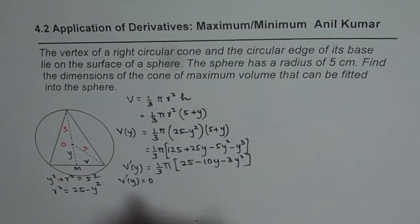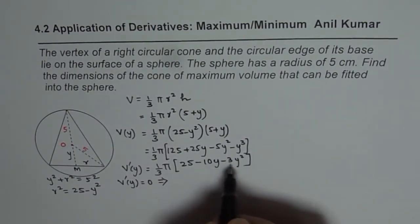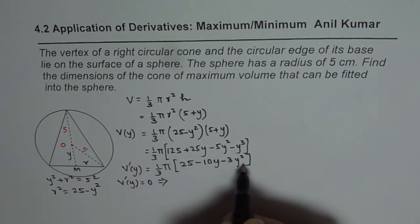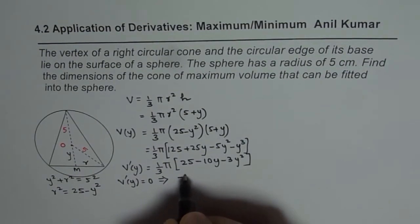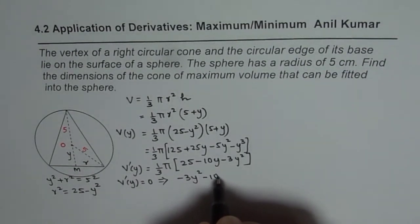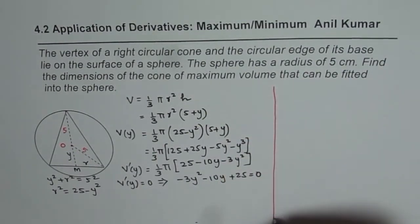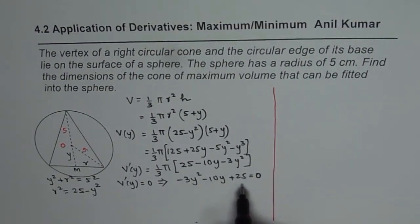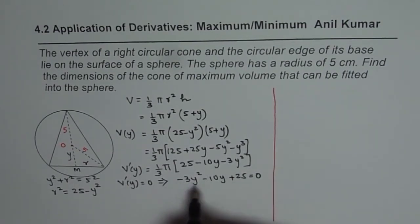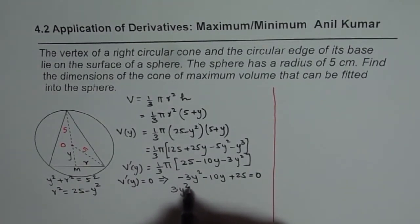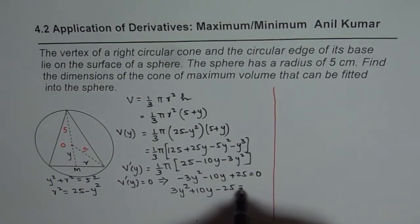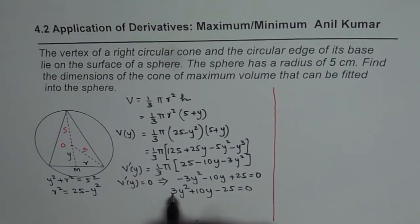So V'(y) equals to 0 means that all this should be equal to 0. So that means basically that this quadratic equation which we have here should be equal to 0. So what we can do here is write this as -3y squared - 10y + 25 equals to 0. To find the zero, we can use quadratic formula. So let us use quadratic formula to find the value of y which will give this as 0. So it is better to write this with positive coefficient. I always prefer that. So rearrange, just multiply by minus and we will have 3y squared + 10y - 25 equals to 0. Just rearrange to get the positive leading coefficient.